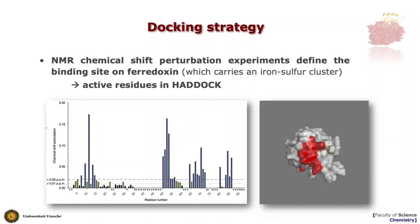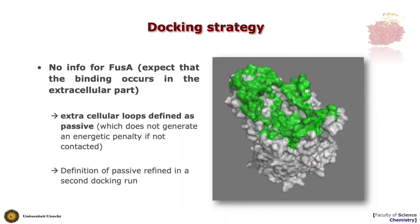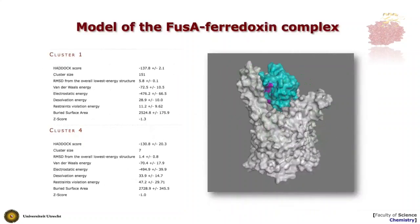For the ferredoxin part — the soluble part of this complex — ferredoxin is a small molecule with an iron-sulfur cluster, and because it was small it was studied by NMR, which could map the binding site. What you see here is the sequence of amino acids of this protein, and on the y-axis you measure the displacement of signals when you titrate FusA into the solution. Regions along the sequence are affected by the binding, and mapping those on the 3D structure defines a well-defined binding patch shown in red. We use this red region to define active residues in HADDOCK.